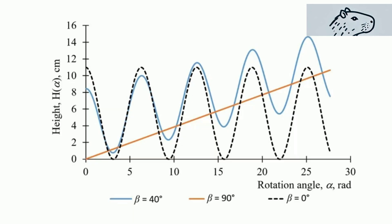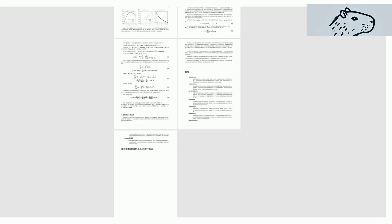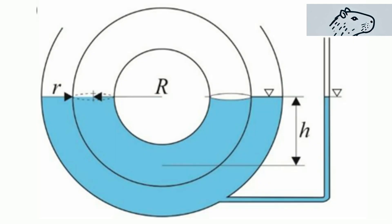supported by detailed theoretical models and COMSOL simulations. The Wilts Pump works by rotating a spiral tube, creating pressure differences that drive water up the spiral.